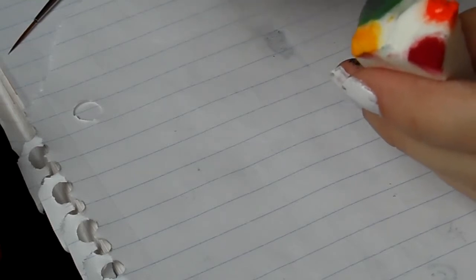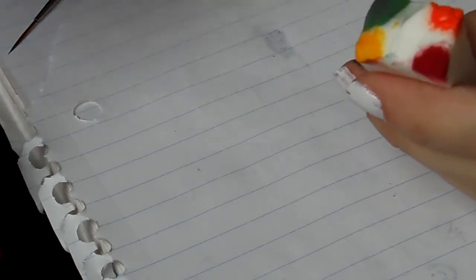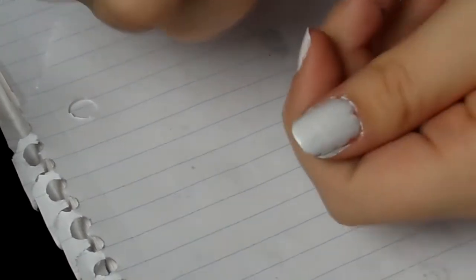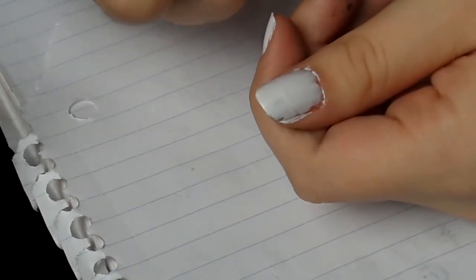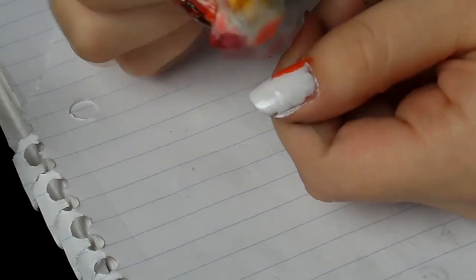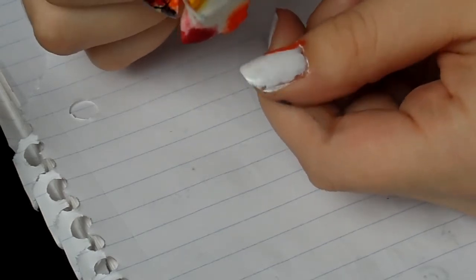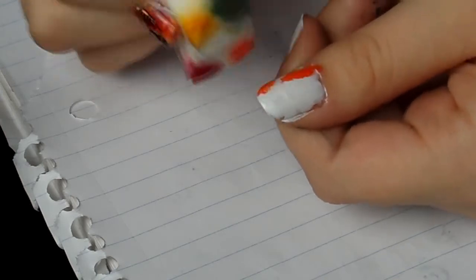You could get these sponges from Target for like a dollar ninety-seven for a whole pack. Now that we have it on that corner, I'm picking two parts of my nail - this corner right here, and we're going to start sponging it, and then this corner right here.